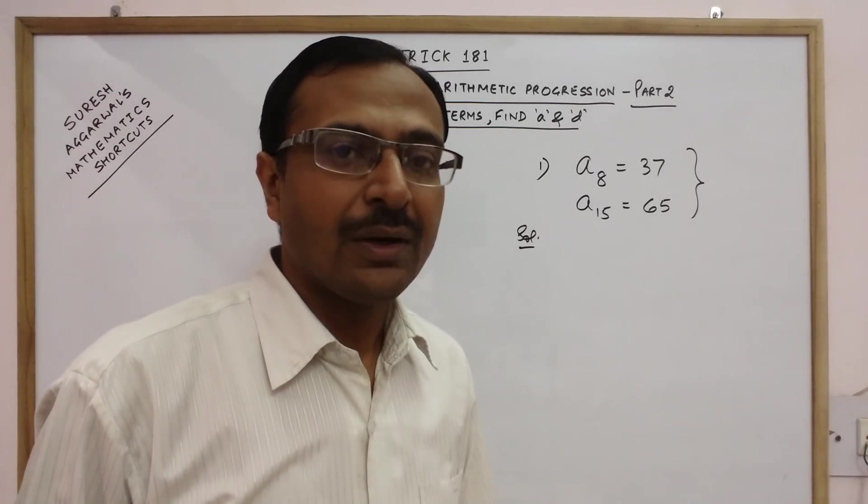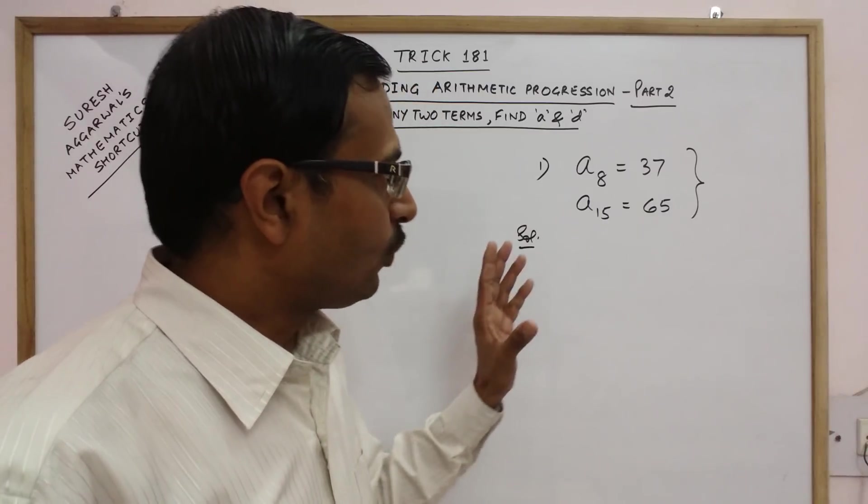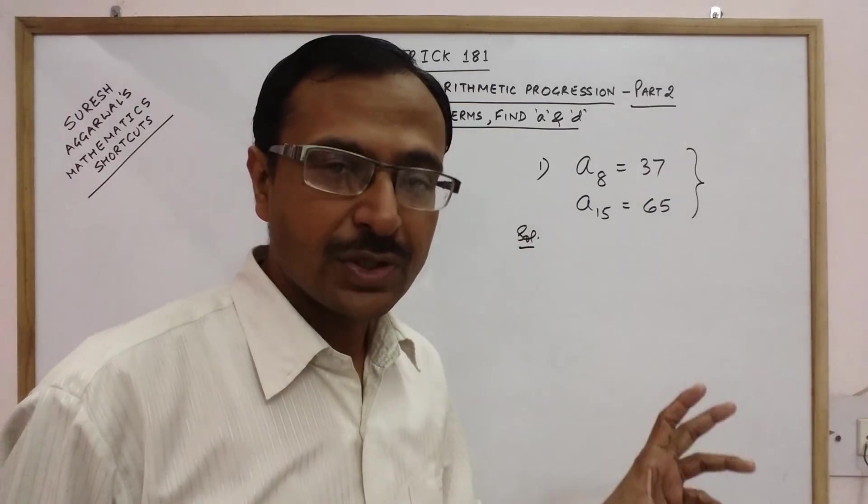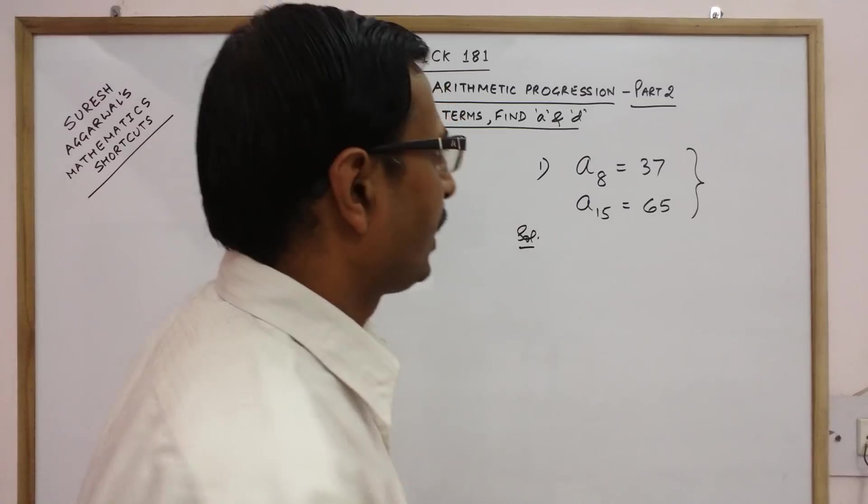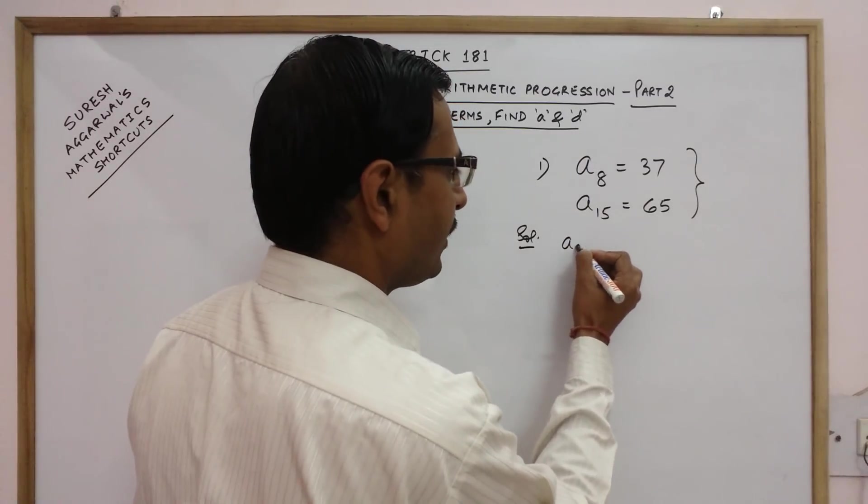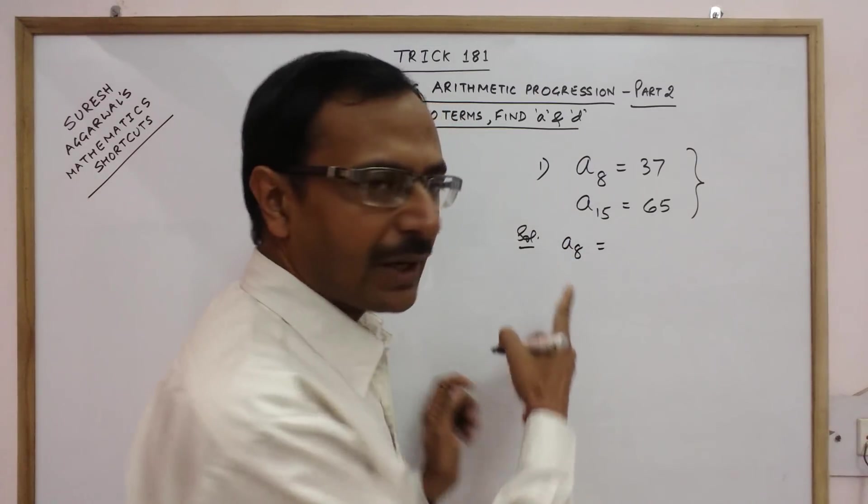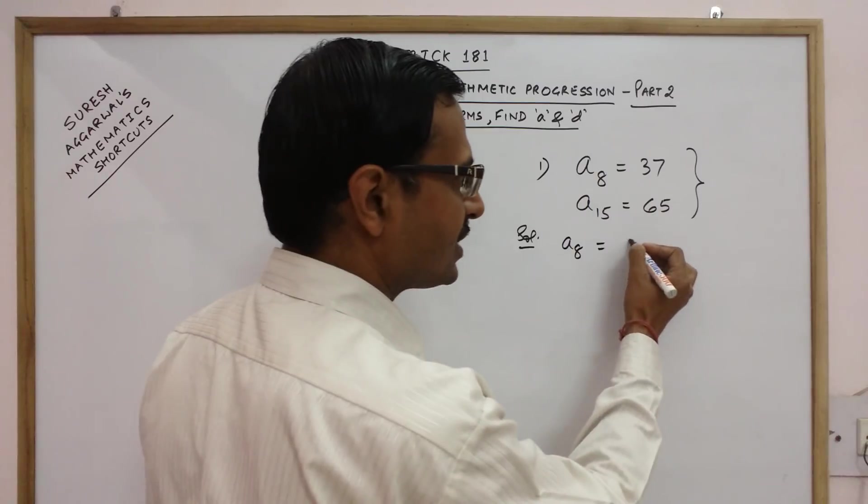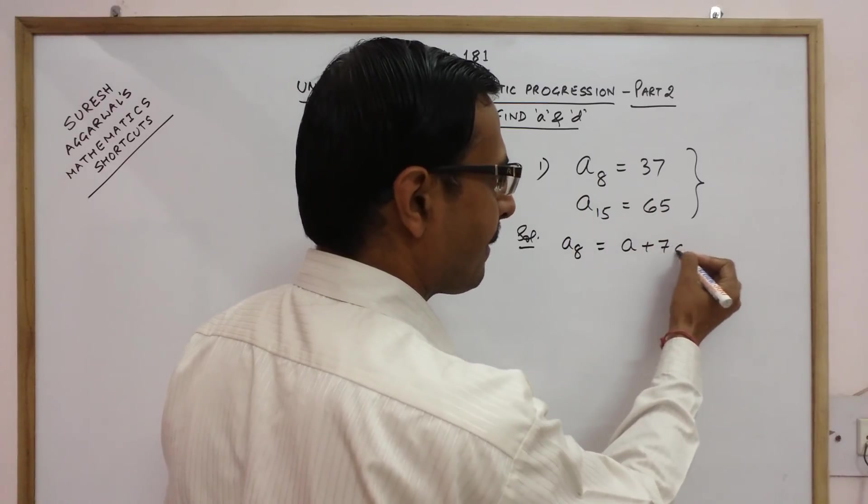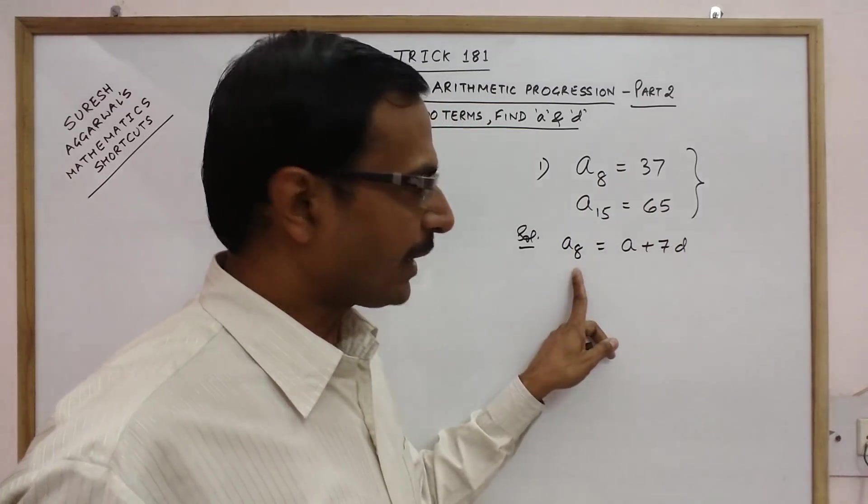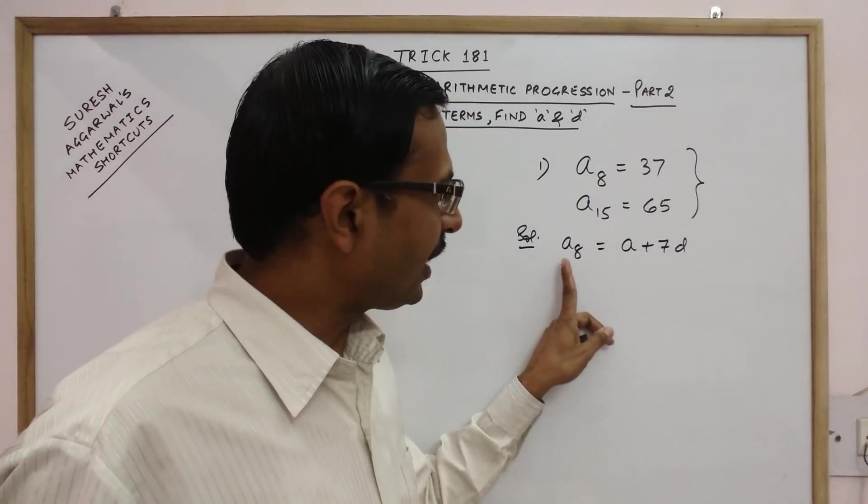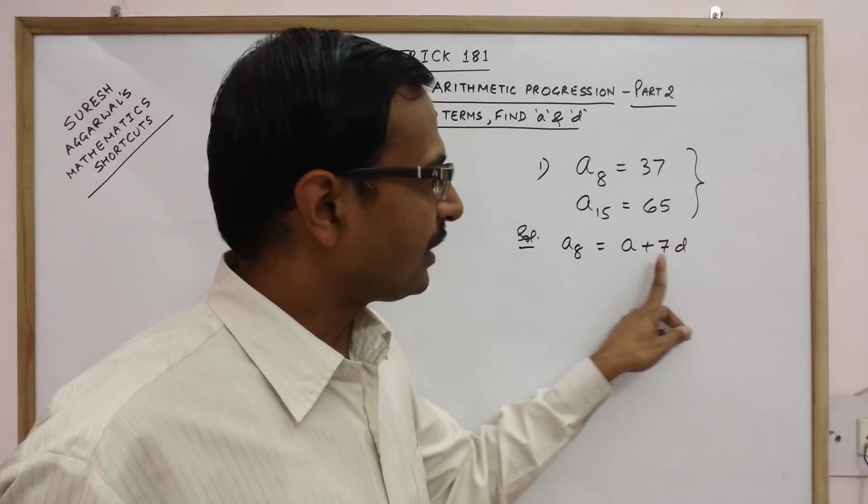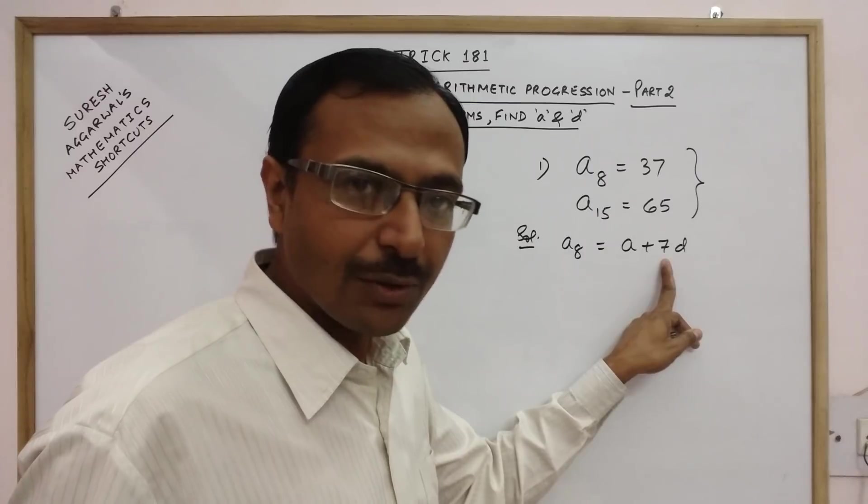So first I tell you the method through which we can solve this using the traditional approach. Now you see A8, the formula for 8th term of an arithmetic progression is A plus 7D. The coefficient of D is always 1 less than the term number. So if we have A8 here then we will have 7 as the coefficient of D.